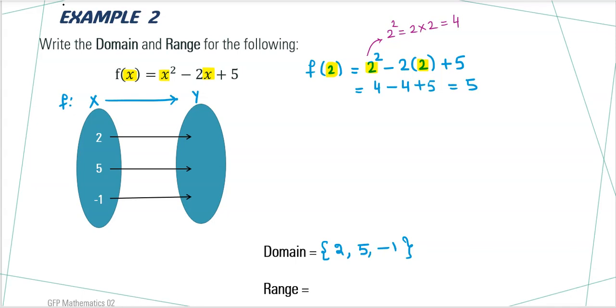This 2 is mapped to 5. Now, replacing x by 5. This gives you 5 power 2 minus 2 times 5 plus 5.